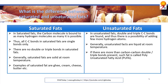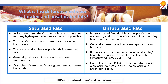Examples of saturated fats are ghee, cream, cheese, butter, etc. Examples of PUFA include palmitoleic acid, oleic acid, myristoleic acid, linoleic acid and arachidonic acid.